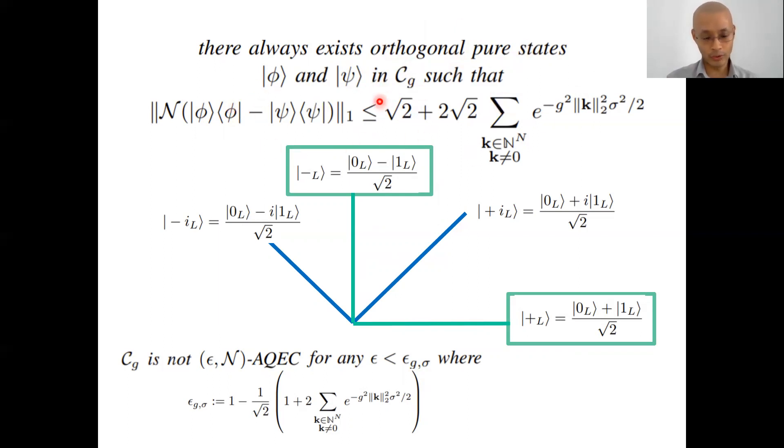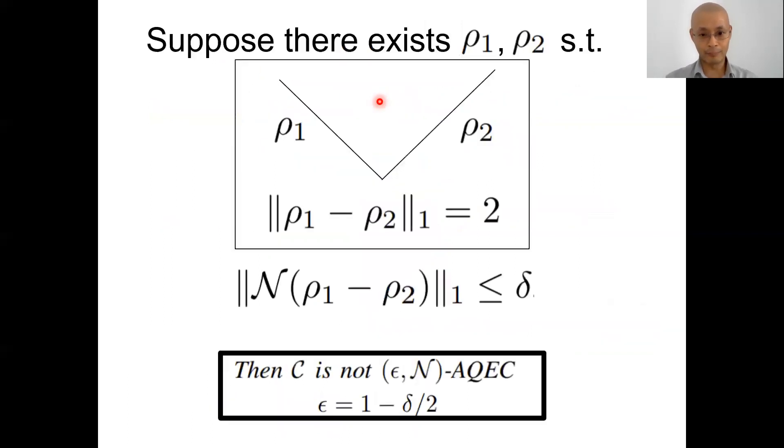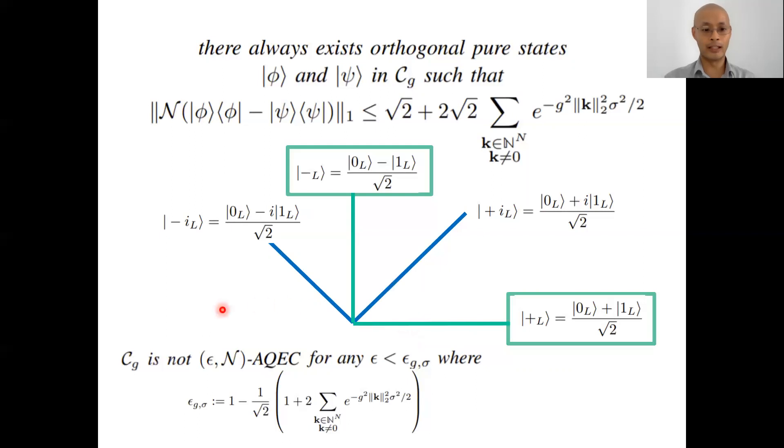Now, since we know this inequality holds, let us combine it with the previous lemma over here. You combine it with the previous lemma over here, and then we have the main result, which is that these g-gap bosonic codes are not epsilon N AQEC for any epsilon less than this threshold. But where this N is the Gaussian dephasing channel with a standard deviation of sigma and mean of zero.